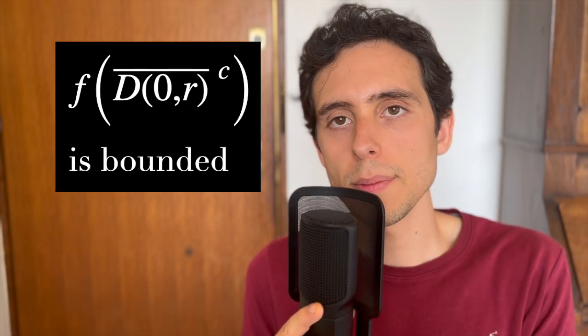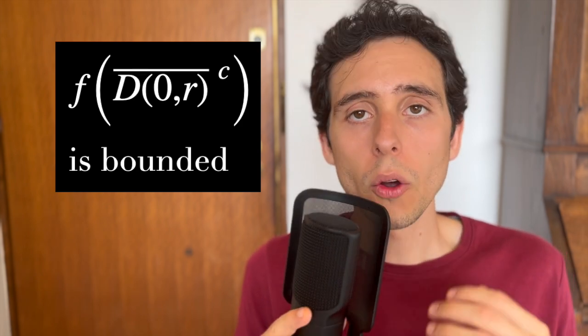So, we can say that this image, which is a set, is bounded. We know how the image of f is for points outside of this closed disk with centering 0 and radius r, namely, its complement. But what about points inside of the disk?